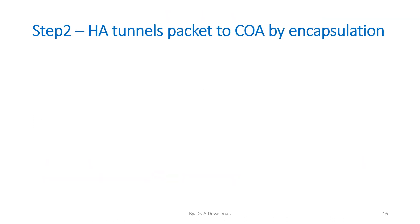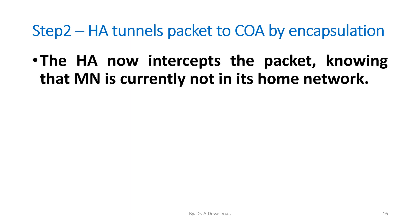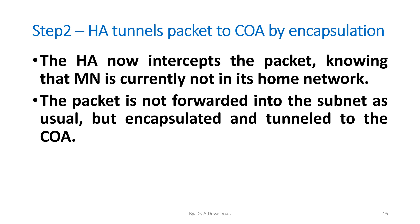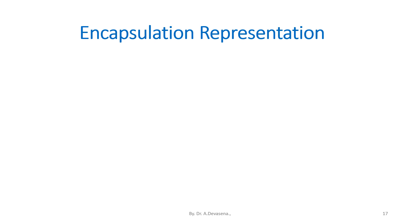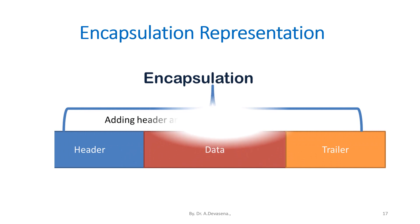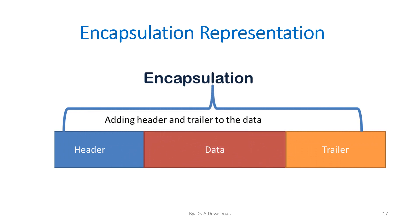Step 2 detail: HA tunnels the packet to COA by encapsulation. The HA intercepts the packet, knowing that the MN is currently not in its home network. The packet is not forwarded to the subnet as usual but encapsulated and tunneled to the COA. A new header is put in front of the old IP header showing the COA as the new destination and the HA as the source of the encapsulated packet.